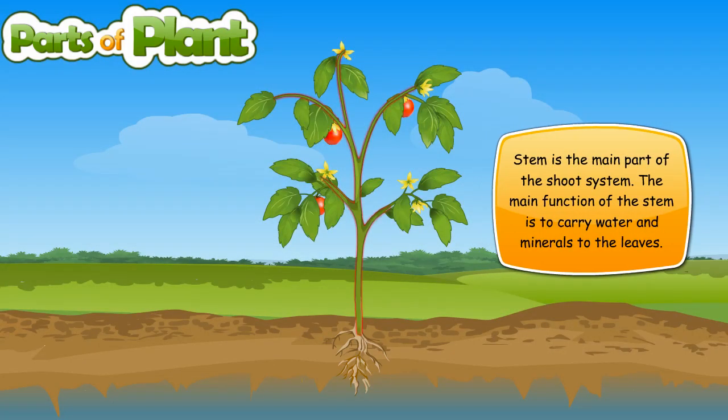The stem is the main part of the plant. The main function of the stem is to carry water and minerals to the leaves.